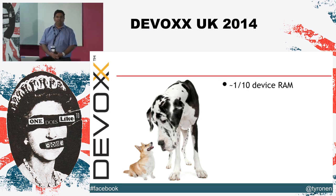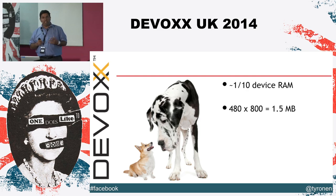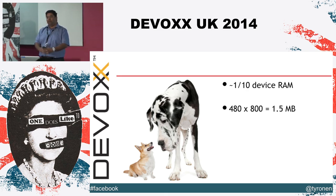Consider what an image is. When you decompress an image out of JPEG and show it on screen, every single pixel has eight bits for red, eight bits for blue, eight bits for green, and eight bits for alpha — 32 bits per pixel. Times the number of pixels means that for a medium-sized image, 480 by 800, which is probably the most common phone screen size today, that's 1.5 meg out of a heap that could only be 32 meg. One-tenth of all the memory available to your application can be used by a single full-screen photo.